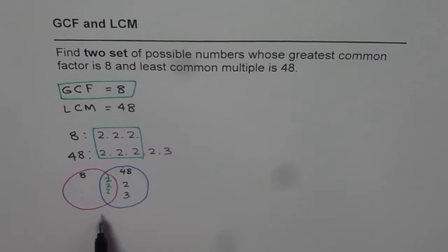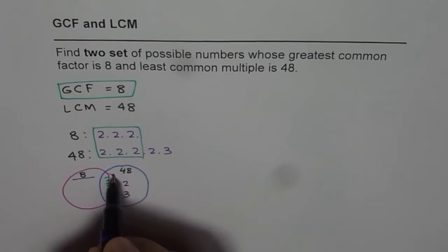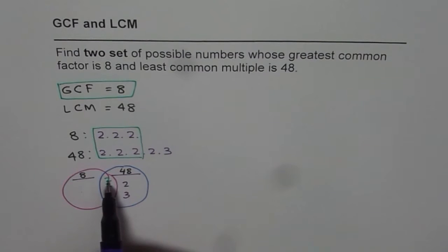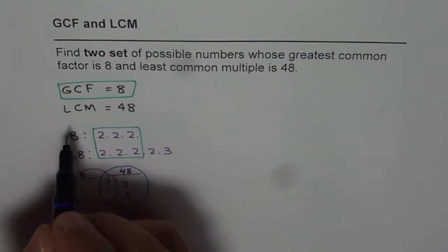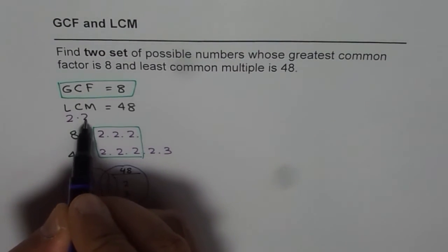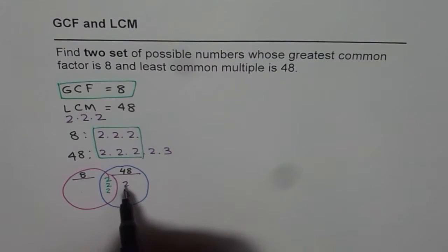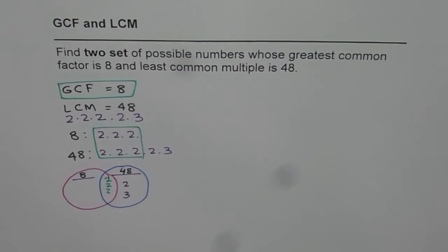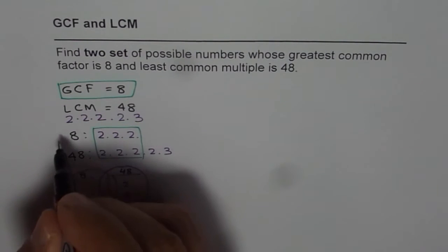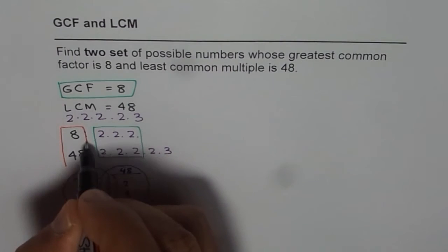And the least common multiple is found by multiplying all of these together. You get 2 times 2 times 2 times 2 times 3, which is 48. So least common multiple is obtained by multiplying all these factors — that is the common ones, 2 times 2 times 2, times those which are not common, which is 2 times 3. That is how you get your least common multiple. So we got one answer: our set of numbers is 8 and 48.